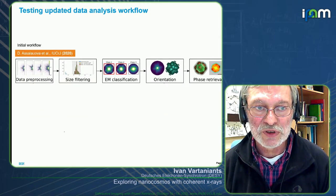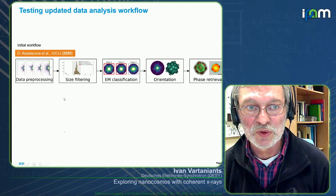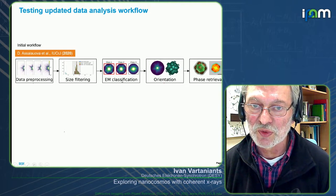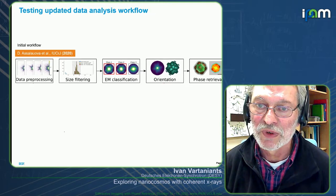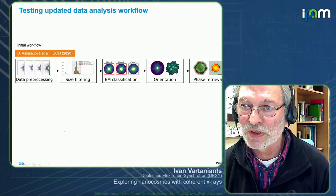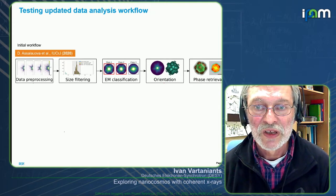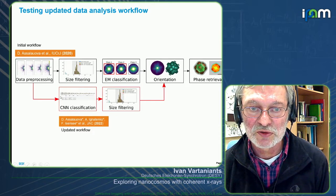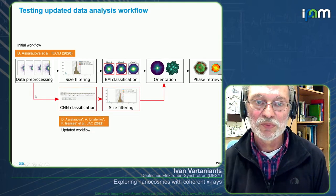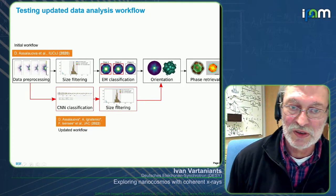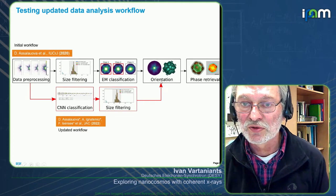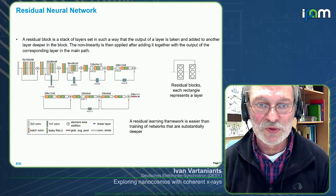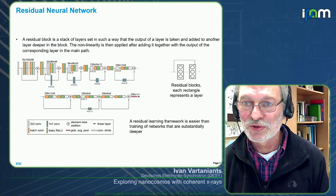Where we wanted to use machine learning was on the following side: we have data pre-processing, size filtering, and EM classification. After the classification step we have to solve the orientation problem and then go to phase retrieval. What we were thinking to do is whether it's possible to bypass these steps — after data pre-processing, go to CNN classification, then size filtering, and then to the orientation step. We also used one of the CNNs that was shown yesterday.